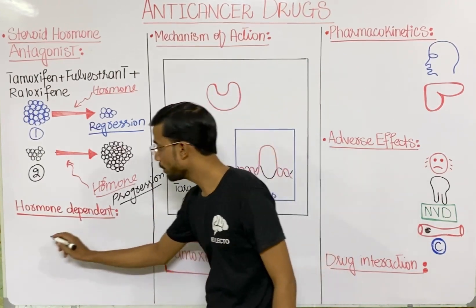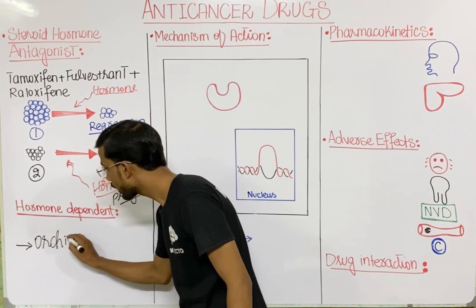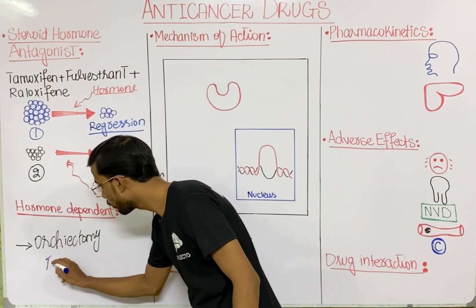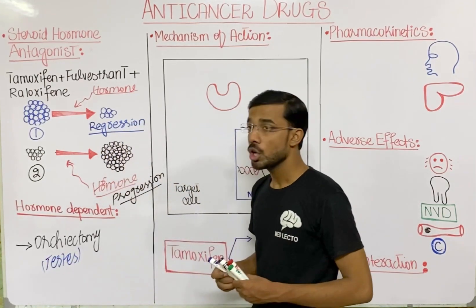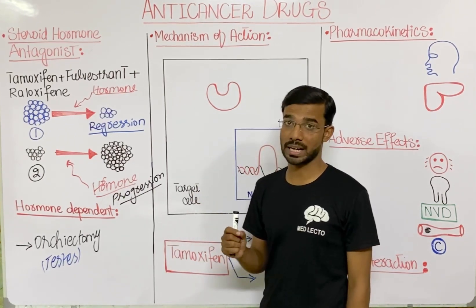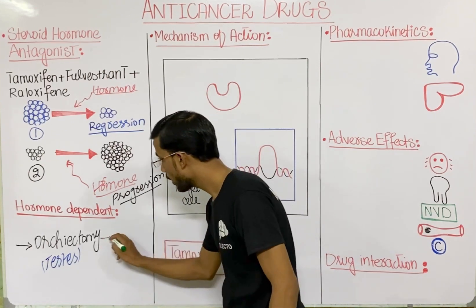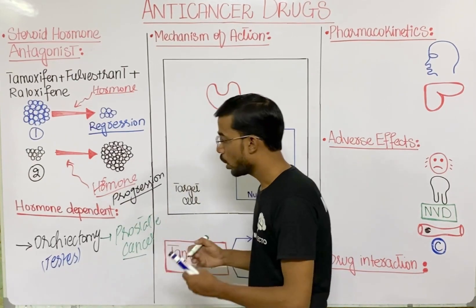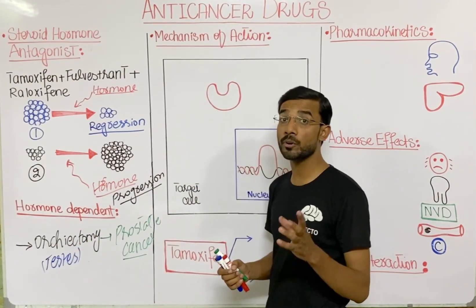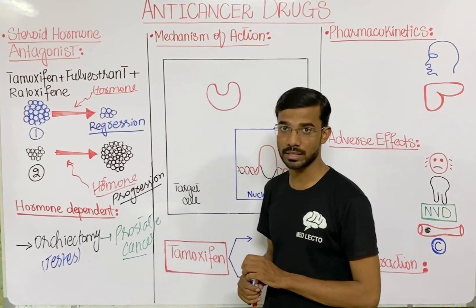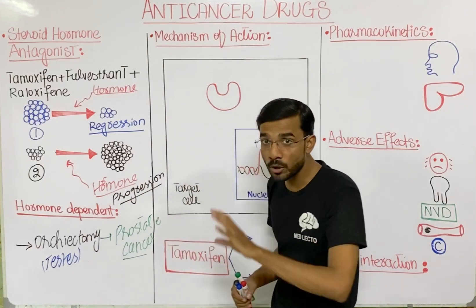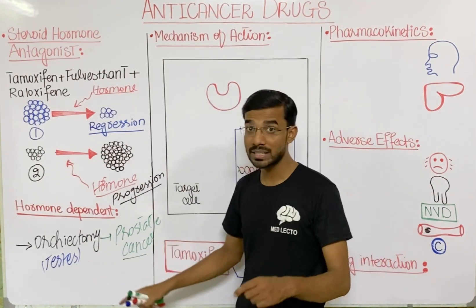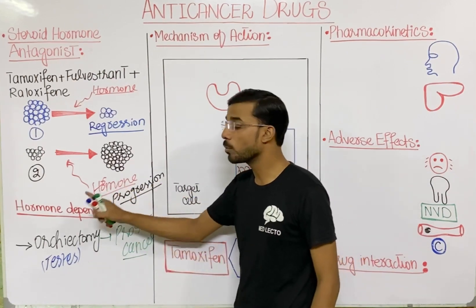For example, the first option is orchiectomy — the surgical removal of one or both testes. In prostate cancer, if we remove the testes that produce the hormone stimulating the cancer, there is no production of that hormone and no progression of the prostate cancer.